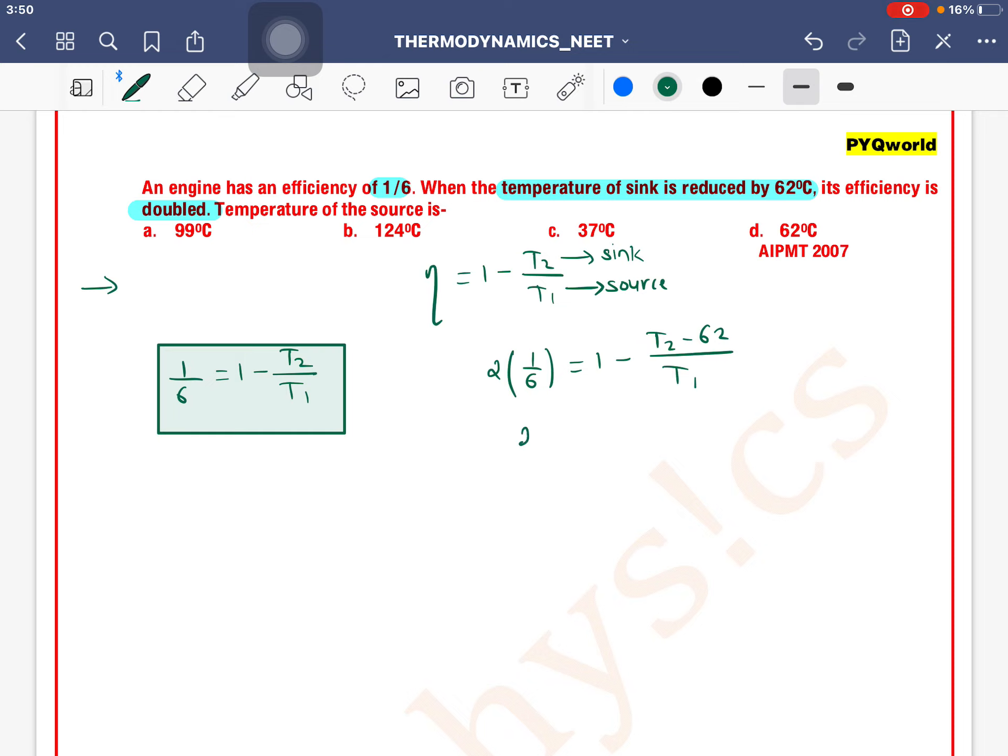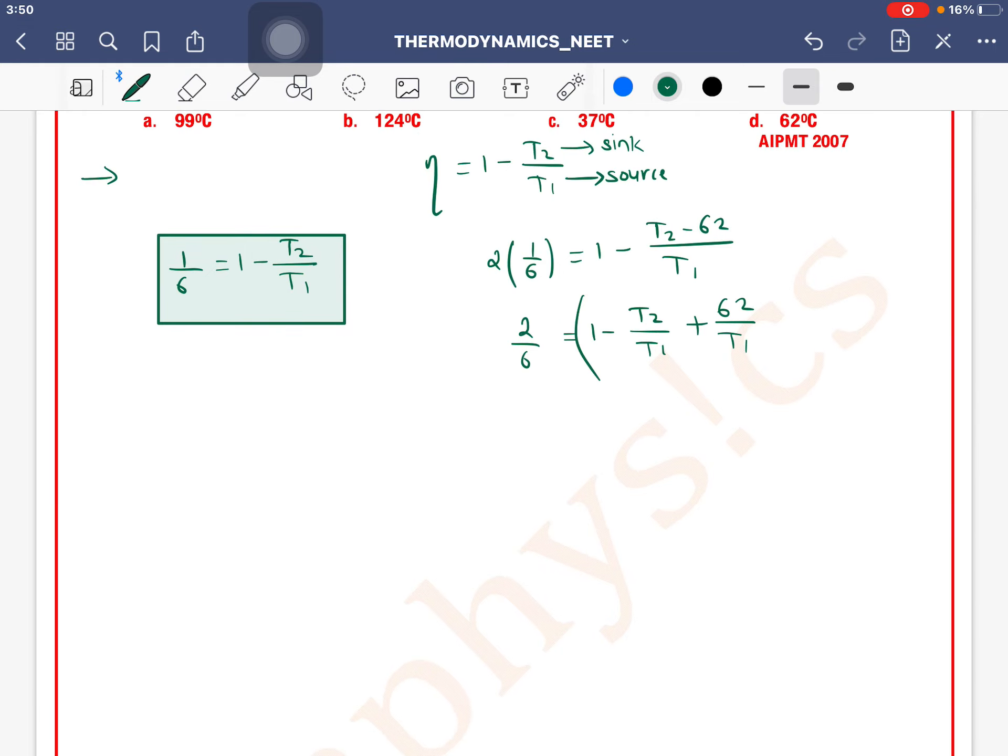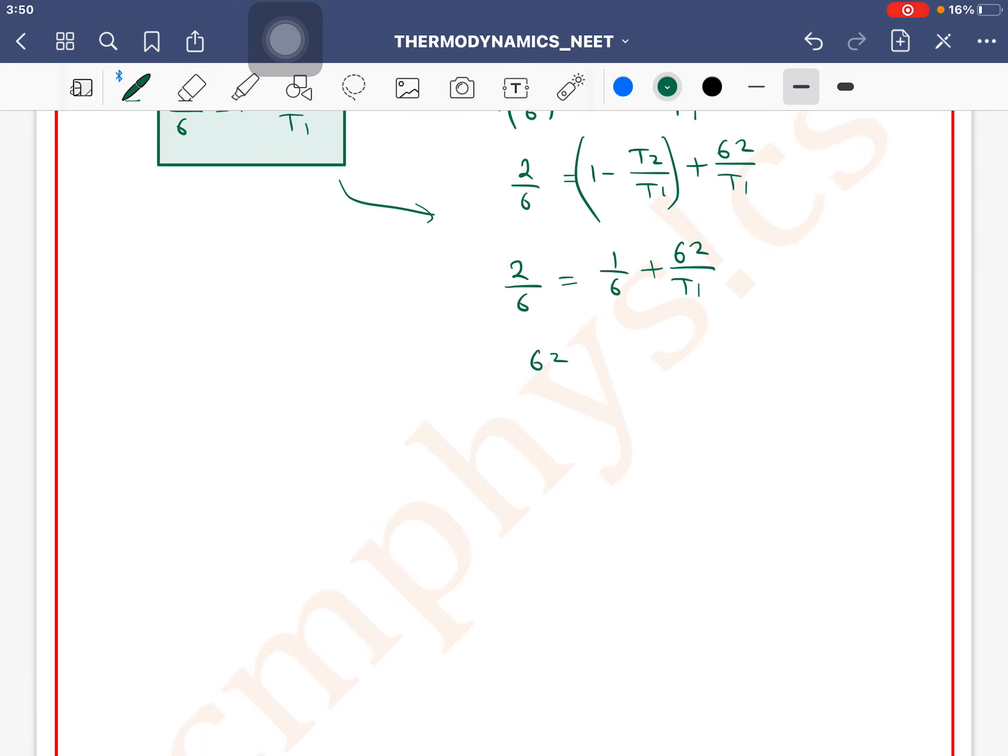So 2/6 = 1 - T2/T1 + 62/T1. Now 1 - T2/T1 from the first equation is 1/6, so 2/6 = 1/6 + 62/T1.